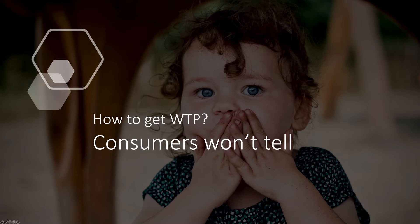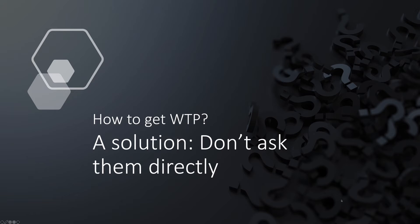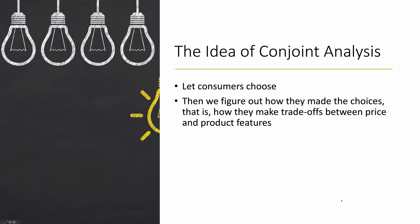What do we do then? A solution in marketing that has been proved successful in the marketplace is not to ask consumers directly what their willingness to pays are. Instead, we're going to let consumers make some choices. Like in the actual market conditions, we don't ask how much you're willing to pay for something, but instead we show you a bunch of products and let you make choices. Then, as market researchers, we figure out how consumers were making trade-offs between price and different product features.